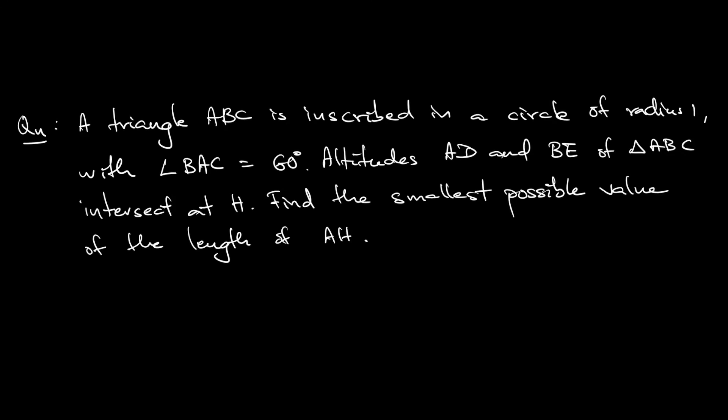Okay, let's read the question together. So this is a geometry question. The question says that triangle ABC is inscribed in a circle with radius 1. So the circumradius of this triangle ABC is 1 and angle is 60 degrees. The altitudes AD and BE intersect at point H. So point H is technically the orthocenter. Find the smallest possible value of the length of AH.